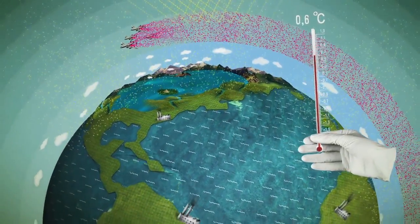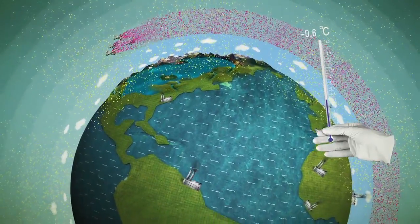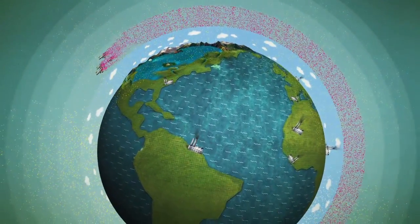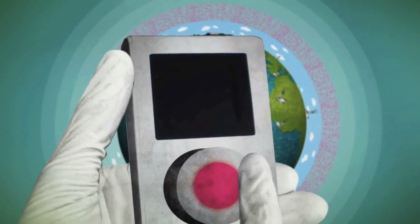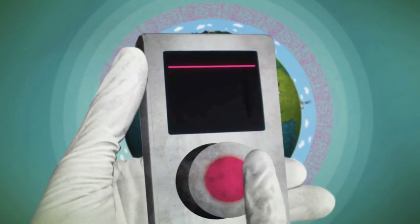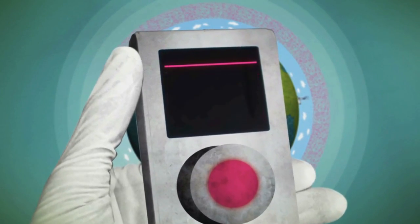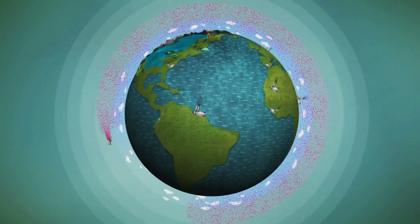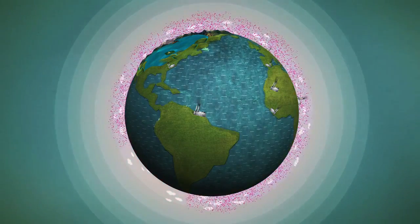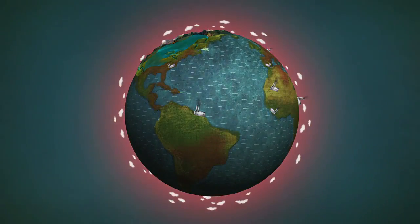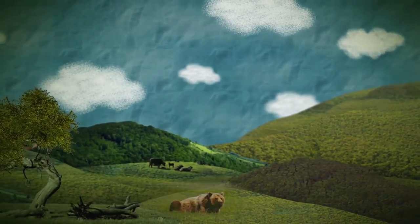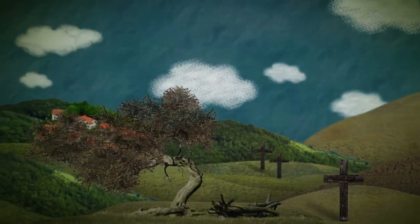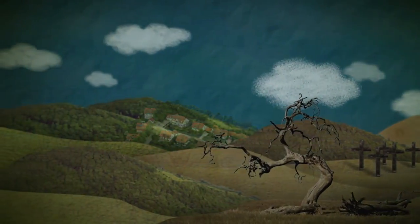And what if this technological intervention in the climate system were suddenly halted for technical, political, social or economic reasons? This would trigger a shock to the system, a so-called termination shock. The shock would cause a sudden increase in temperature, leading to an acceleration in climate change. Many plants and animals, as well as human societies, would be unable to adapt to such rapid climate change.